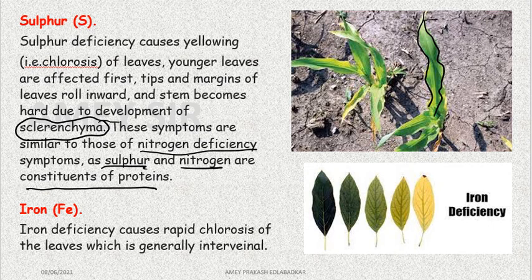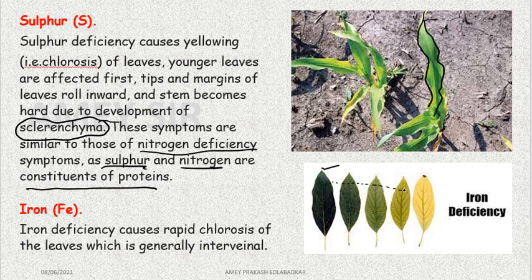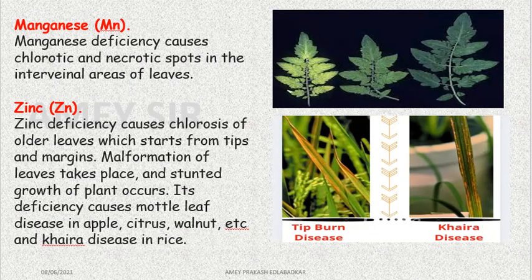Iron is not a macronutrient, but its role is very important. Iron deficiency causes rapid chlorosis. You can see a proper leaf here — as iron deficiency increases, the entire leaf turns yellow, and tissue death occurs there.